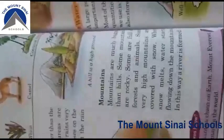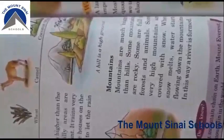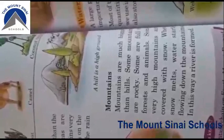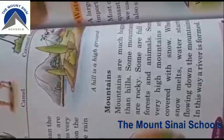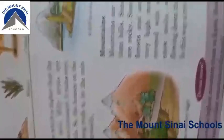Mountains are much bigger than hills. Some mountains are rocky and some are muddy — made up of soil — and those areas can be a little bit dangerous. Some mountains are very high and some are covered with snow. Where snow melts, water starts flowing down the mountains and makes beautiful waterfalls. We can see beautiful waterfalls in the mountainous areas of Pakistan.